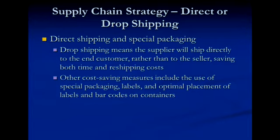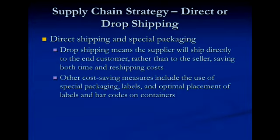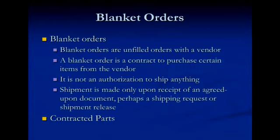Other cost-savings measures include special packaging, labeling, and optimal placement of labels and barcodes on containers — basically you can direct-ship or drop-ship material from your plant to your suppliers. A blanket order is a good concept for purchasing. A blanket order gives an unfulfilled order with a vendor — it's a contract in place, not an authorization to ship, but an agreement on how to ship and the price. Think of it as having a contract in place for parts.